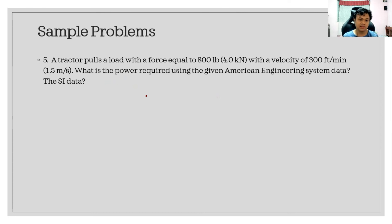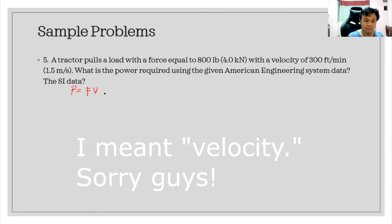For the last problem: a tractor pulls a load with a force equal to 800 pounds or 4 kilonewtons with a velocity of 300 feet per minute or 1.5 meter per second. What is the power required using the given American engineering system data and the SI data? We will solve this problem. The formula for the power here is power equals force times the velocity.